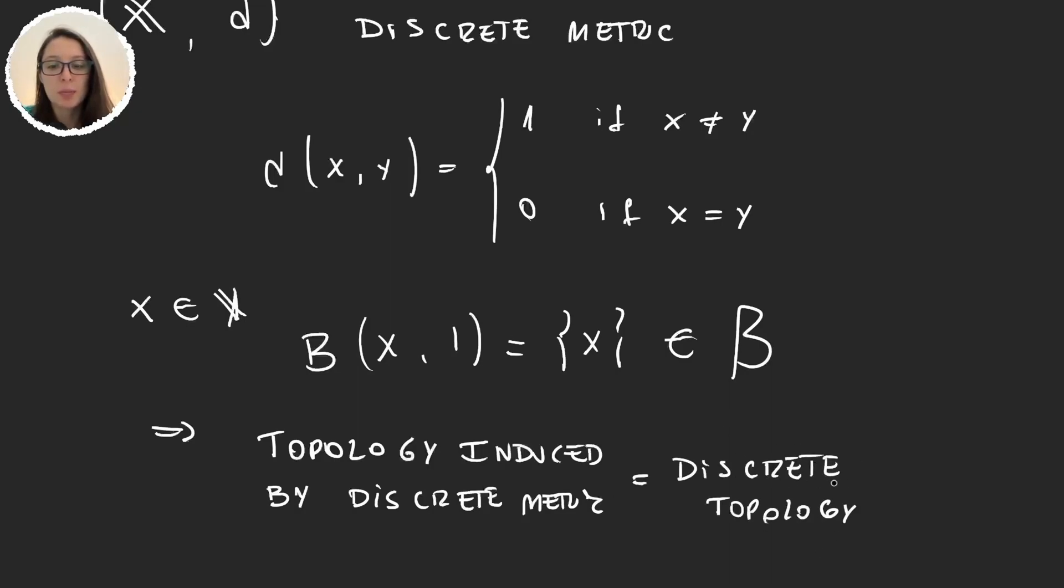Remember that the discrete topology was P(X). And the basis for this topology was the set of all the singletons {x}. So that is why these two topologies are the same.